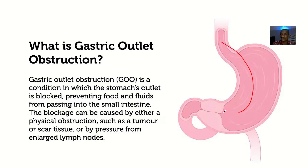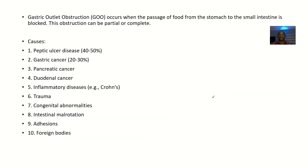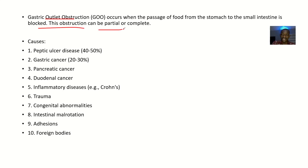The outlet is where food from the stomach gets into the duodenum. Gastric outlet obstruction occurs when the passage of food from the stomach to the small intestine is blocked. The obstruction could be partial or complete.